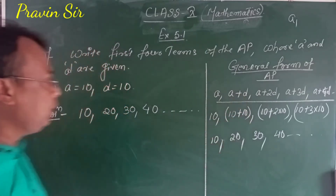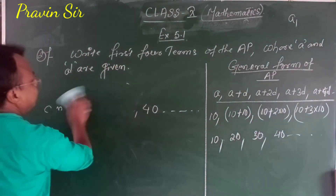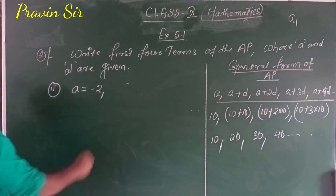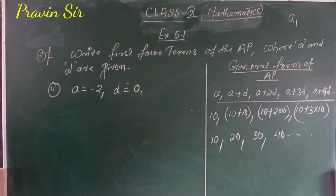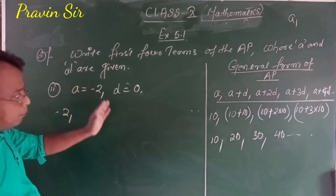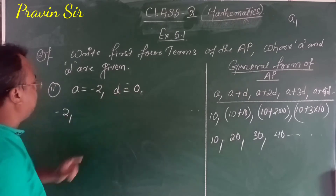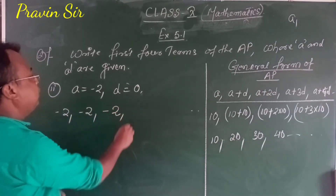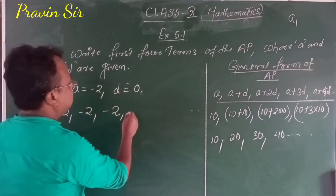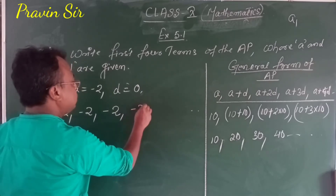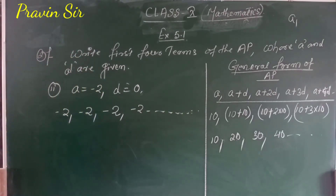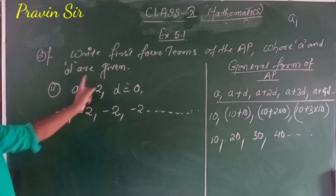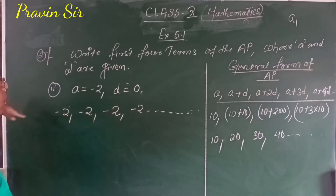Now question number 2: A is equal to minus 2, D is equal to 0. First term is minus 2. Second term: minus 2 plus 0 equals minus 2. Third term: minus 2 plus 0 equals minus 2. Fourth term: minus 2 plus 0 equals minus 2. So the series is: minus 2, minus 2, minus 2, minus 2.